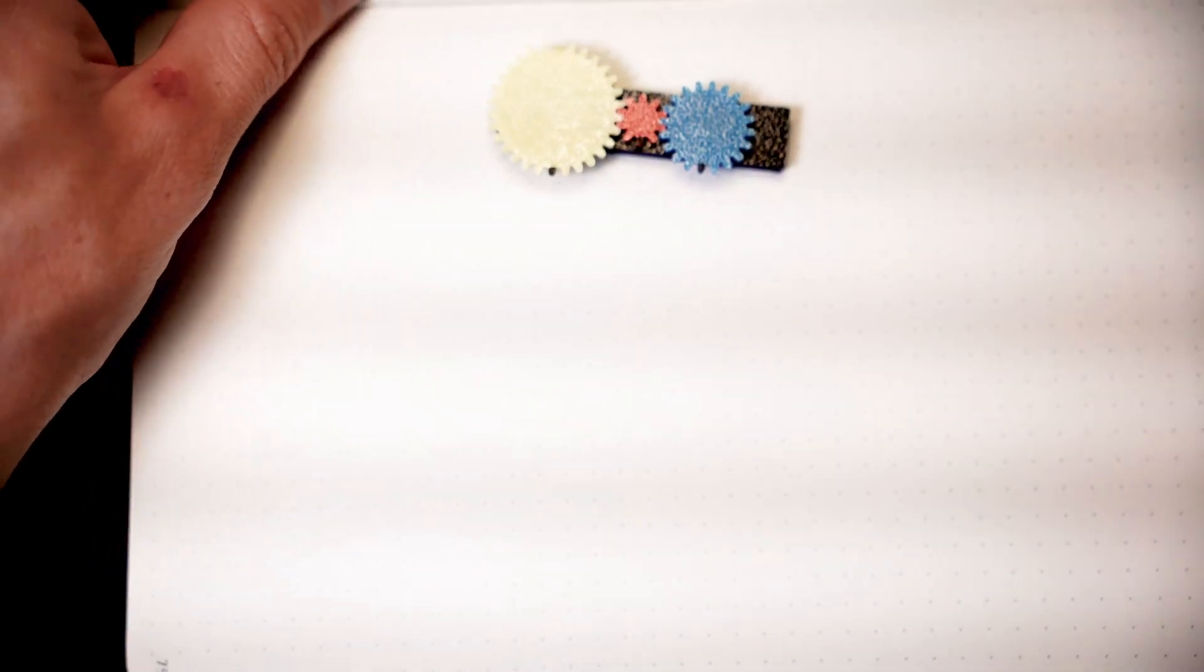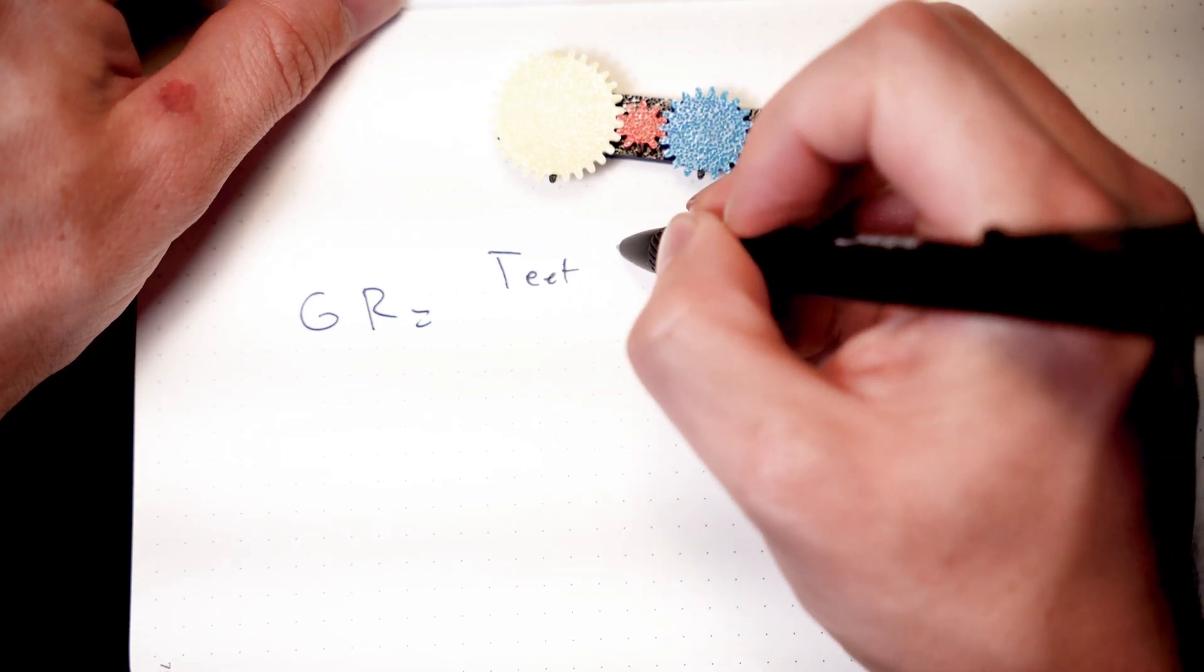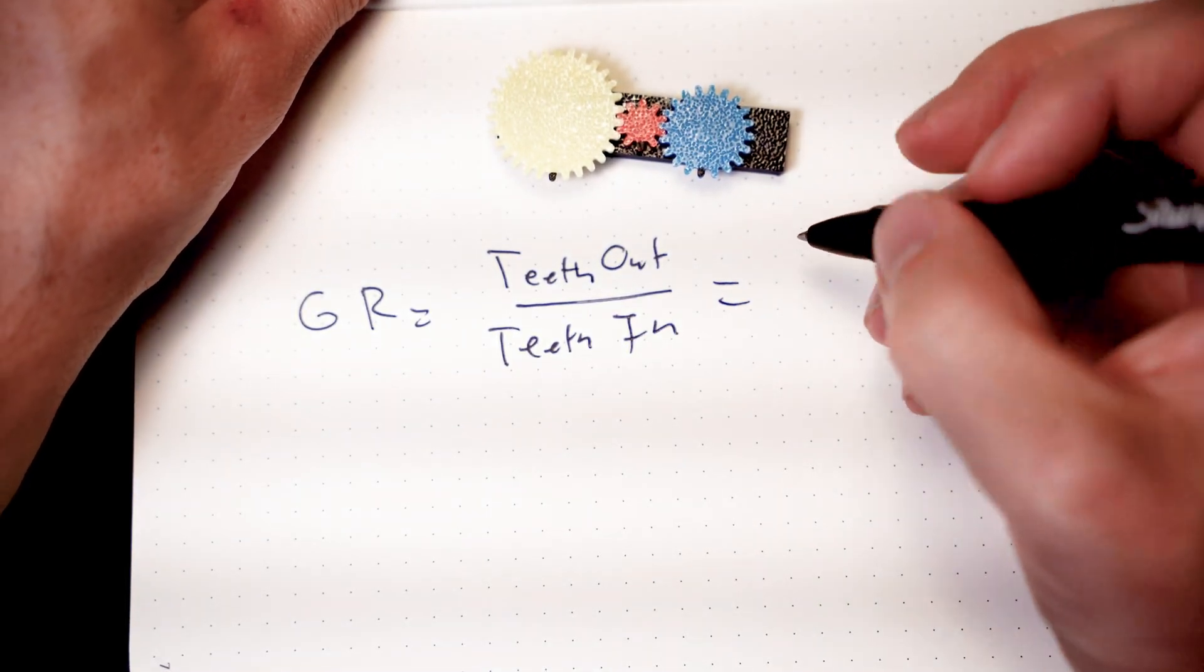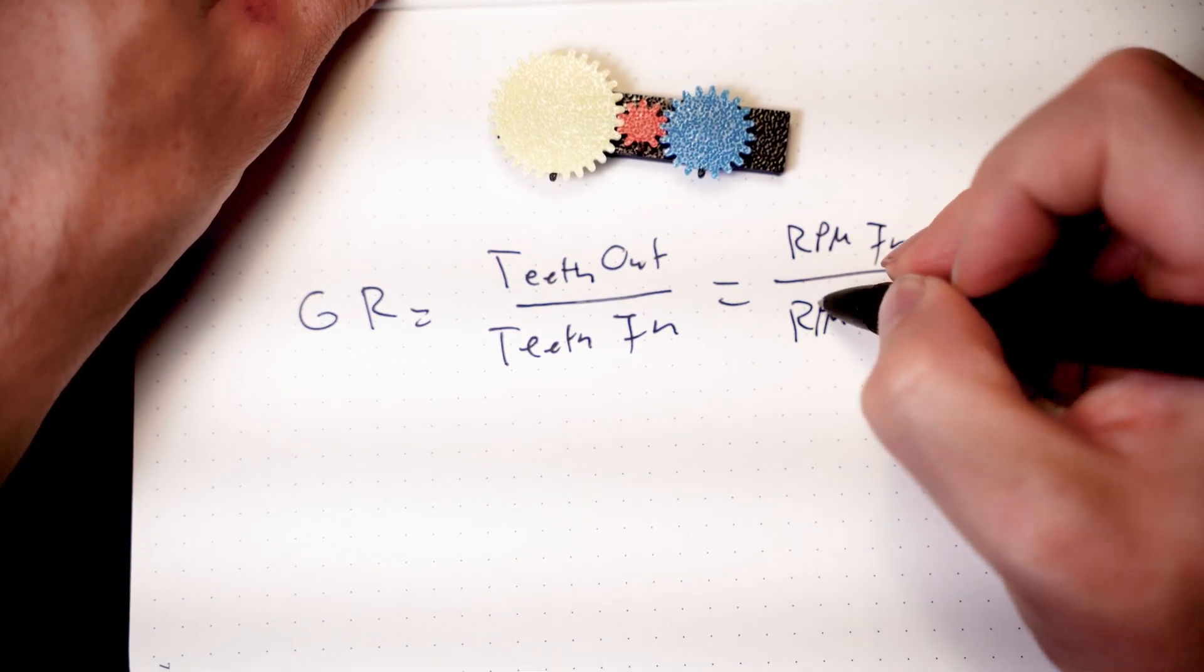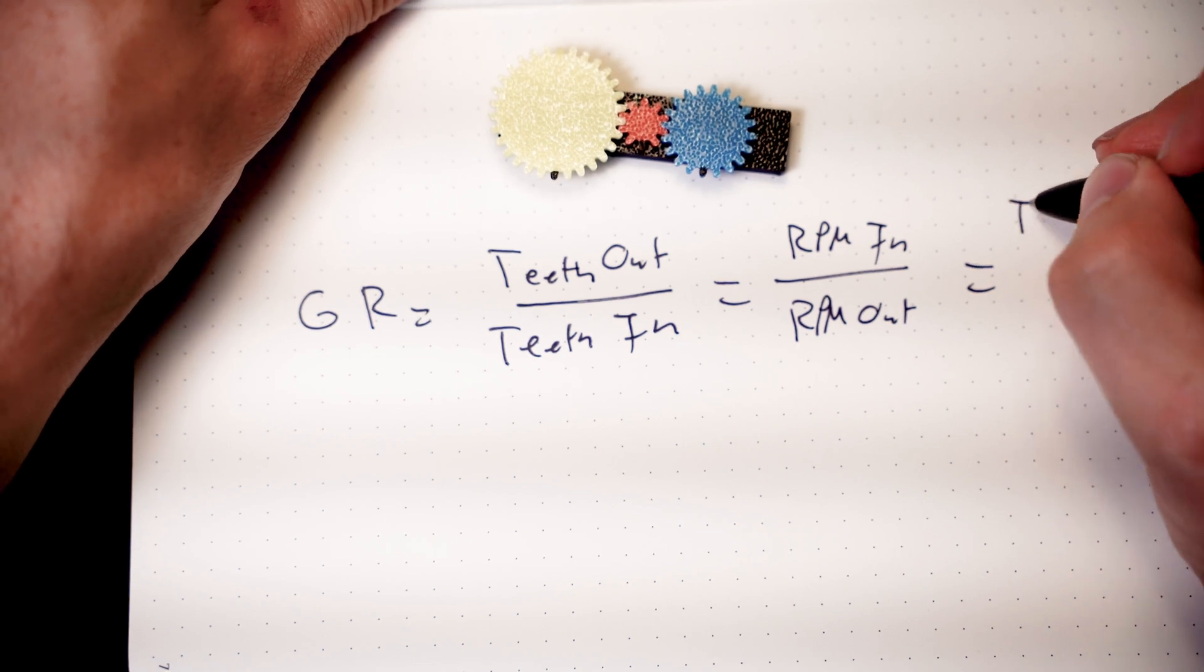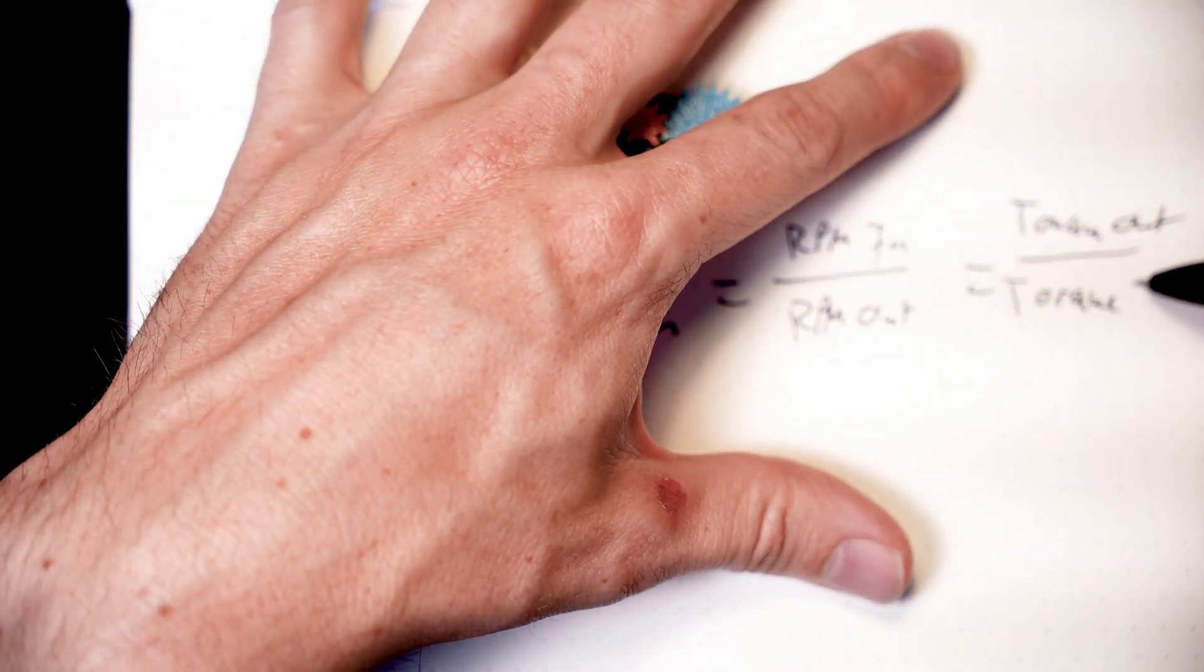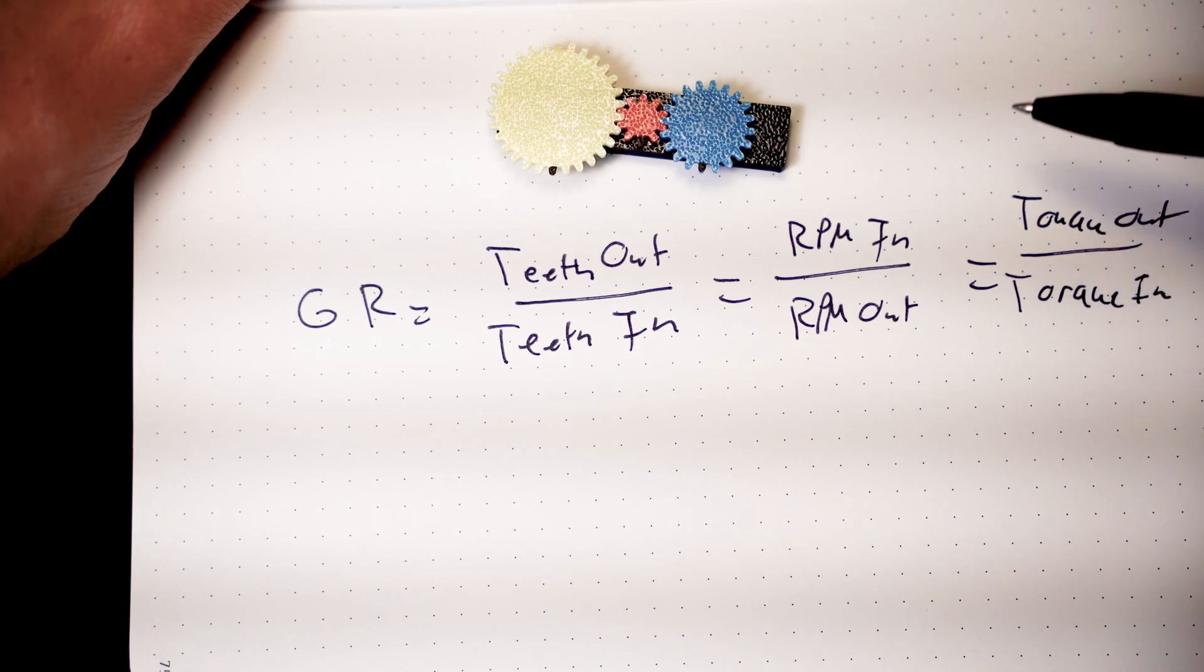Now for calculating gear ratios, not only can we use the teeth out divided by the teeth in to find a gear ratio, we can also use our RPM in divided by our RPM out or if we know it, we can use our torque out divided by our torque in. So those are three more calculations that you can use to be able to find your gear ratios.